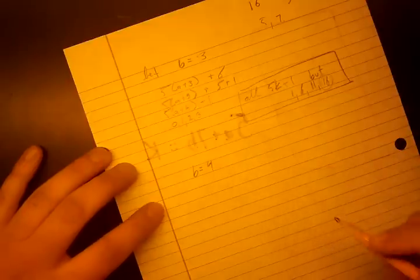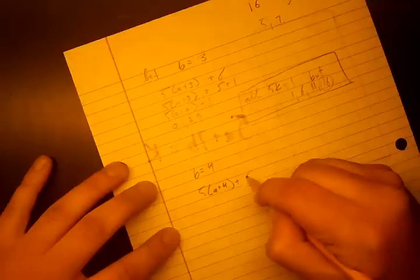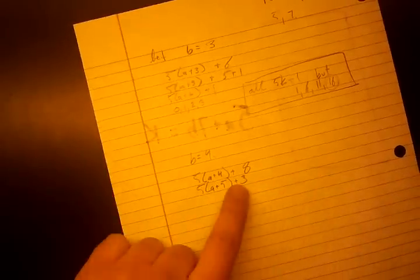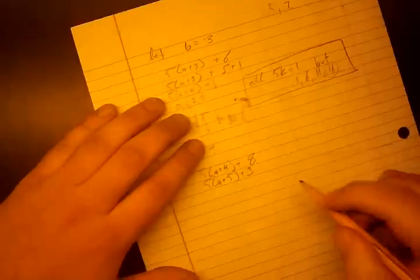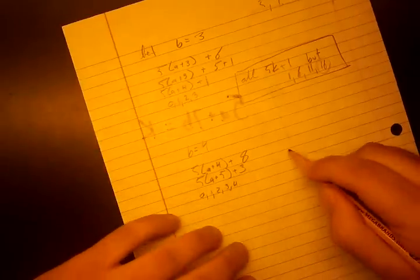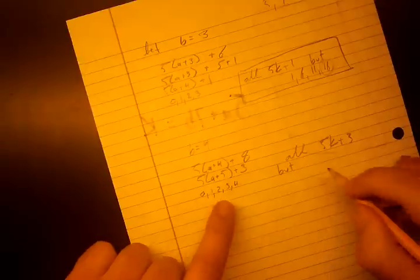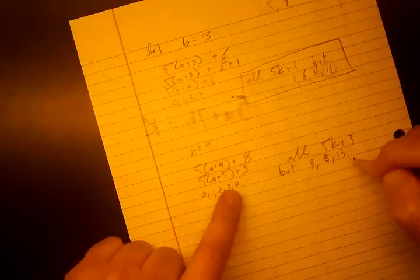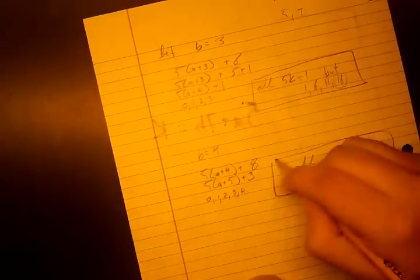And let's just do it one more time. Let's let B = 4. So then we get 5(A+4) + 8. That's the same thing as writing 5(A+5) + 3. So now we're dealing with multiples of 5 plus 3. Any number that's 5 times something plus 3. And A+5 can't be 0, 1, 2, 3, or 4. That means we can form all 5K+3. But if we put 0, we get 3. If we put 1, we get 8. We get 2, we get 13. We get 3, we get 18. And 4 is 23. So all those.